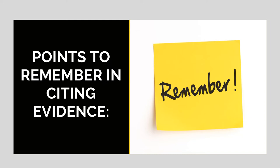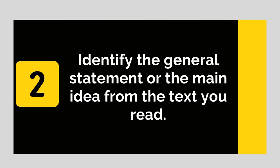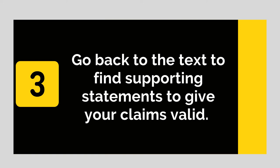Now, let us move on to the five points to remember in citing text evidence. First, read and understand the text thoroughly. It is important to read the text thoroughly so that you may be able to identify not only the main idea of the text, but also the specific details to support the main idea. Second, identify the general statement or the main idea from the text you read. When you are able to identify the general statement, it would be easier for you to cite or search for the text evidence to support your claims. Third, go back to the text to find supporting statements to give your claims valid. Once the general statement is identified, that's the time to look for specific details from the text that will support the general statement.